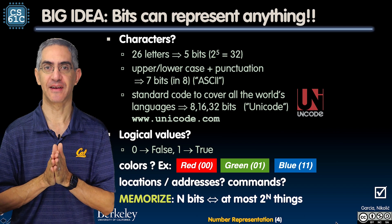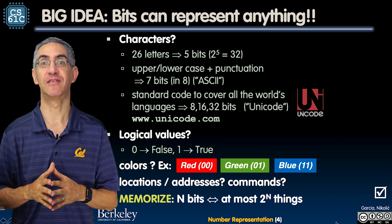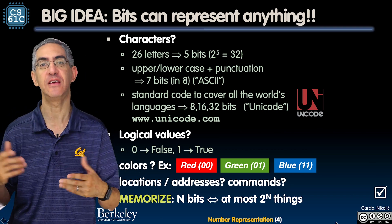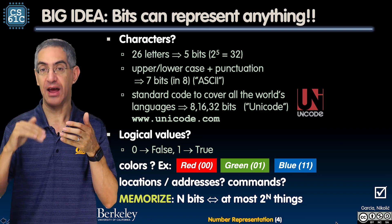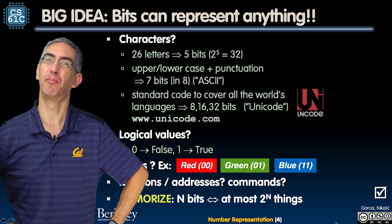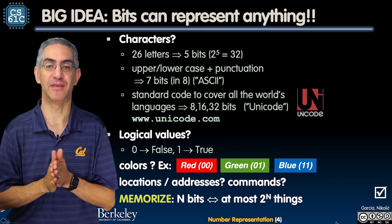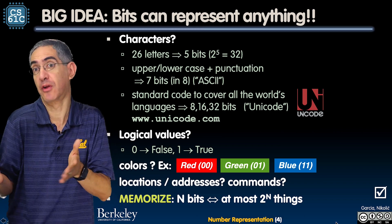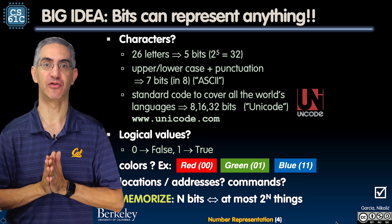The big idea in this first lecture is that bits can represent anything. They can represent characters — I've got 26 characters A through Z so I'm going to use five bits. 2^5 is 32, so I'll have one bit pattern for each character. Actually, I want uppercase and lowercase and some punctuation, so let's do seven bits — we'll reserve eight bits but only use seven — and that's called ASCII: American Standard Code for Information Interchange.